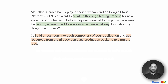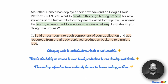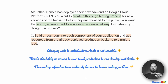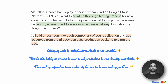Option C suggests that we build stress tests into each component of the application and use resources from the already deployed production backend to simulate load. Again, there is no way that we are going to touch production. Even the idea of changing code to include stress tests is not sensible. We can't be changing the code that is going to be released and deployed to also include the stress test — this has to come from an external component. It also touches production, and the existing infrastructure already has scaling issues. We are not going to overload it with even more tests.